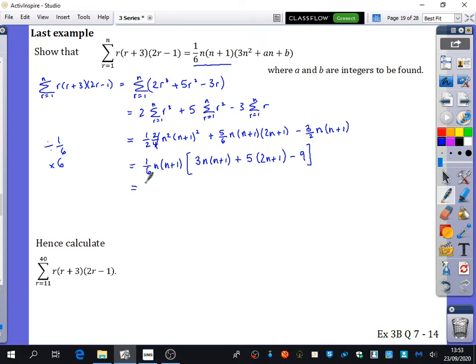Now you can see why I taught you those factorizing skills, because imagine trying to expand all of that. It would just be kind of a nightmare, really. So we've got a sixth n, n plus 1, and I'm just going to go to regular size brackets here. So I have 3n squared plus 3n plus 10n plus 5 minus 9. So I have a sixth n, n plus 1, 3n squared plus 13n minus 4. And if you wanted to, you could state that a is 13 and b is negative 4. And now you can see that it can't be factorized, which is why it was presented to us in the 3n squared plus a n plus b form, rather than these two double brackets that we've got there.